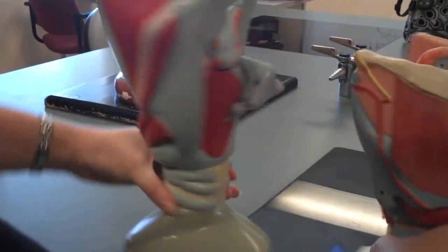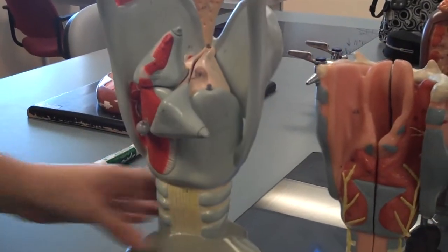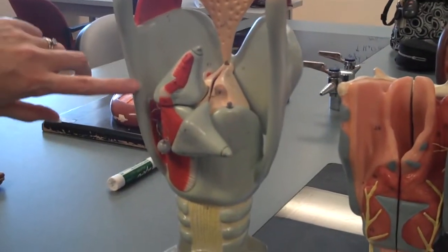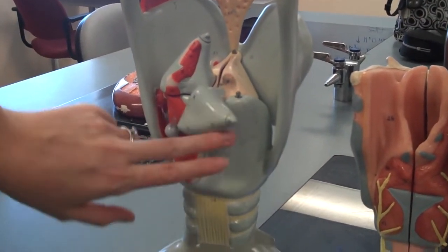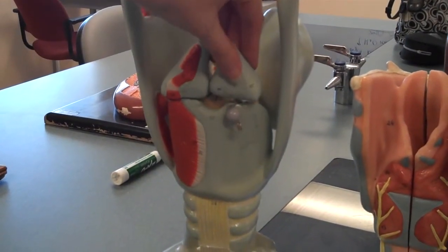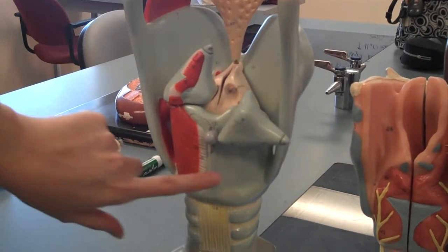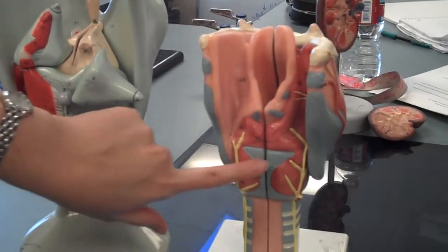If you look at the back, the thyroid cartilage does not really extend into the posterior view, but the cricoid cartilage is actually quite large on the posterior surface, so be aware that the cricoid cartilage sticks up in the back.